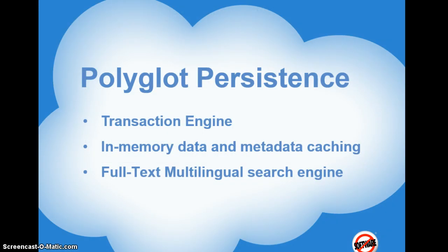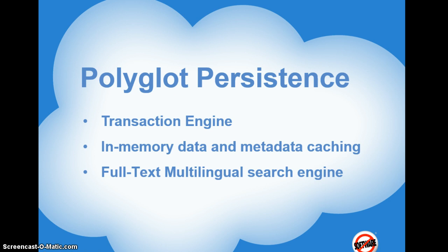Polyglot persistence is the third chief component of Force.com. Basically, polyglot persistence means having different data storage technologies for different kinds of data. Force.com integrates and optimizes several different data persistence technologies such as a transaction engine, metadata caching, and a separate multilingual search engine to deliver transparent polyglot persistence for all applications and devices. What this means is that developers only have to code to a single API without worrying about optimal persistence technologies. They don't have to deal with the complexity of trying to integrate, manage, test, and support several systems.